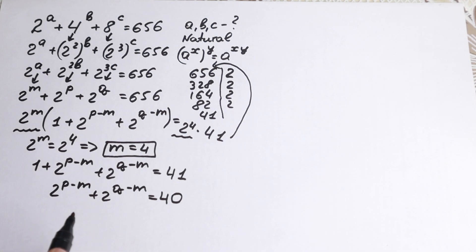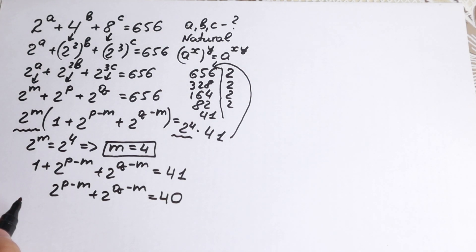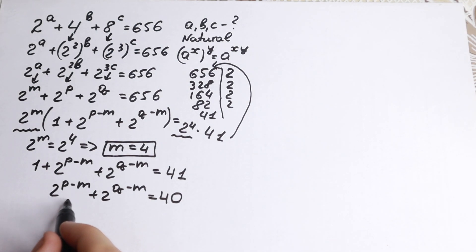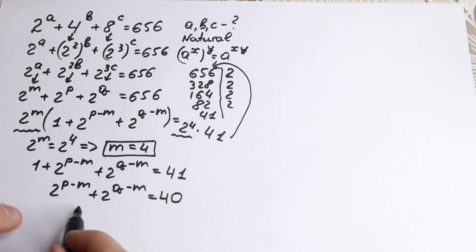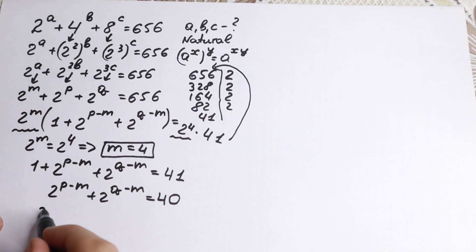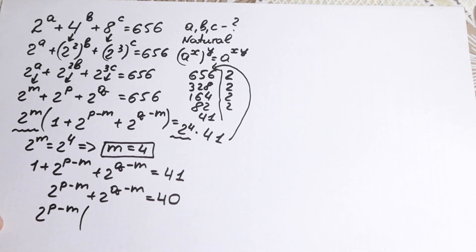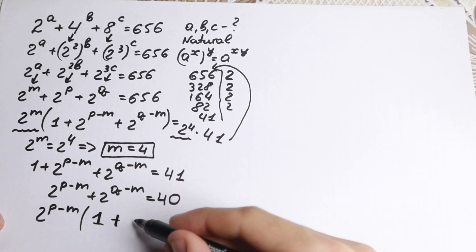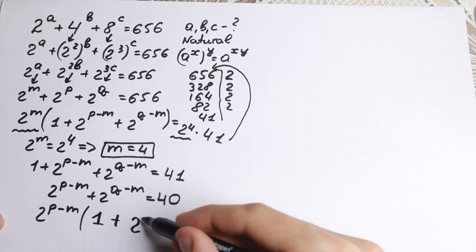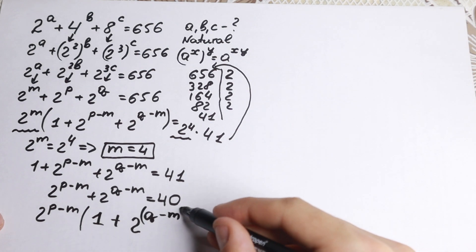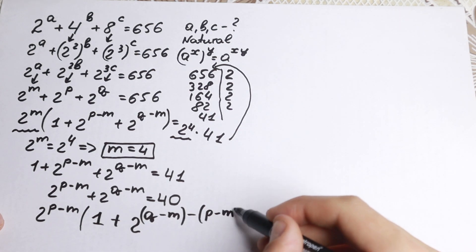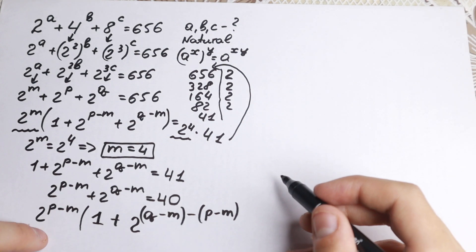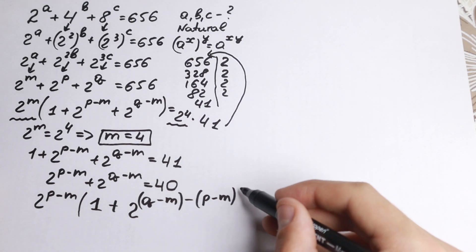We have simplified the problem. Now let's factor out 2 to the power p minus m from this expression. We get 2 to the power p minus m times the quantity 1 plus 2 to the power q minus m minus (p minus m), which simplifies to 1 plus 2 to the power q minus p — equal to 40.